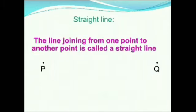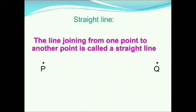First, we will learn about straight line. The line joining from one point to another point is called a straight line. Straight line is a part of a line. To draw a straight line, we should put two points, P and Q, which are horizontal, like this. Now we join these two points and we get a straight line. A straight line has two endpoints, which means it has a definite length.